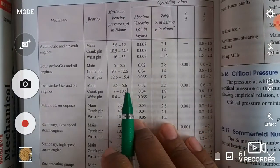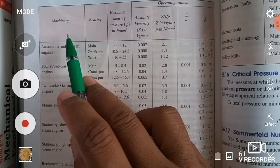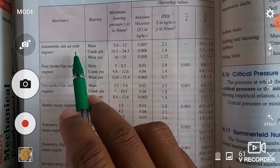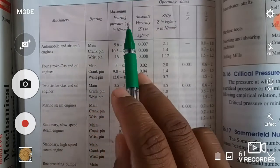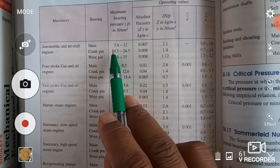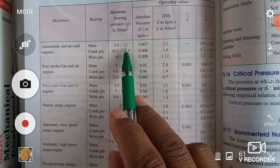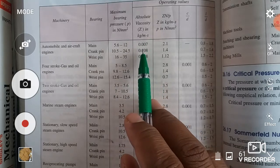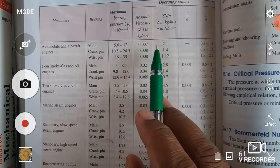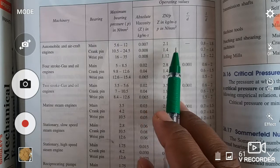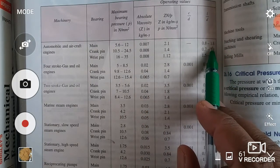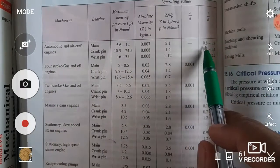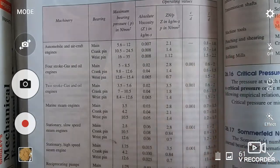If we see the standard table from this book, for example if application is automobile and aircraft engines, bearing is main bearing, maximum bearing pressure we consider as 5.6 to 12 Newton per mm square, absolute viscosity Zn by P becomes 2.1, C by D is dash, L by D is 0.8 to 1.8. So if our application is for automobile purpose then select L by D ratio as between 0.8 to 1.8.